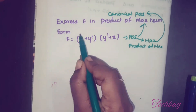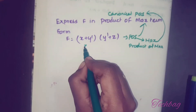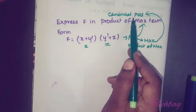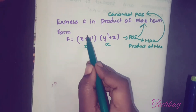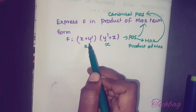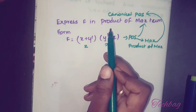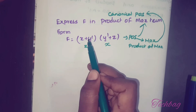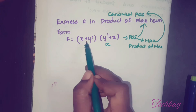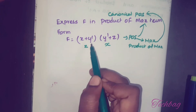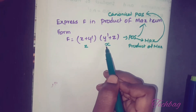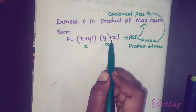This is a function of three variables x, y, and z. In the first sum term, z is missing, and in the second sum term, x is missing. To get a canonical POS form, you have to convert each sum term into a max term. A max term is a sum term which contains all the variables of the function. Here x and y are present but z is missing, and in the other term y and z are present but x is missing.